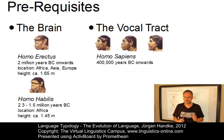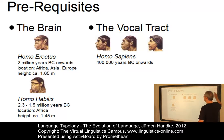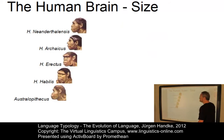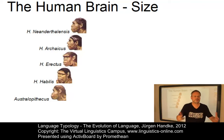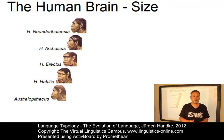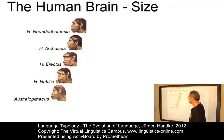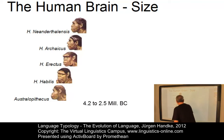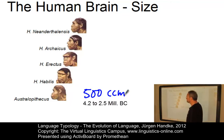The most important prerequisite for the production of language is a well-developed central nervous system with an elaborate cortex. While the Australopithecus cortex volume did not exceed 600 cubic centimeters, Homo sapiens exhibits an average brain volume of roughly 1,400 cubic centimeters. The Australopithecus brain has a volume of roughly 500 cubic centimeters.